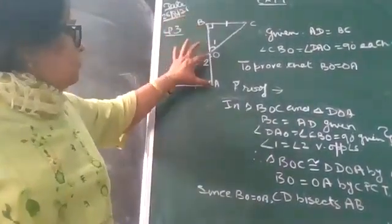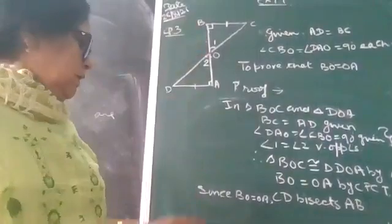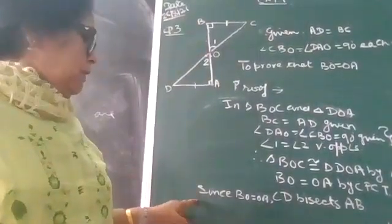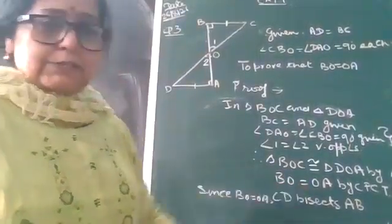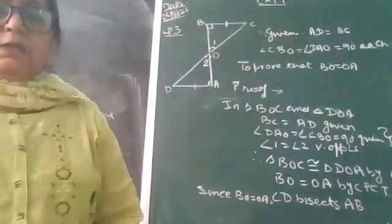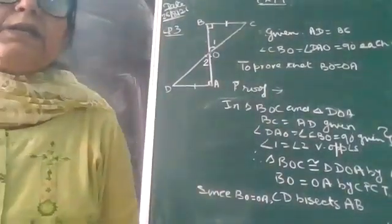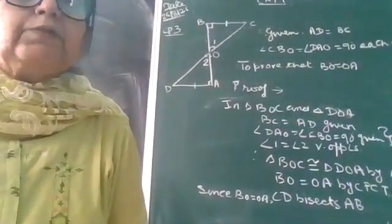When BO is equal to OA, therefore we can say CD bisects AB.